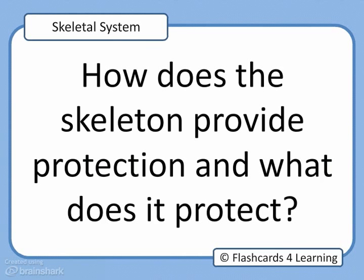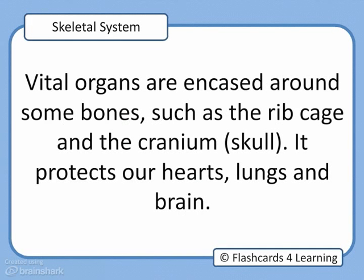How does the skeleton provide protection and what does it protect? Vital organs are encased around some bones such as the rib cage and the cranium or skull. It protects our hearts, lungs and brain.